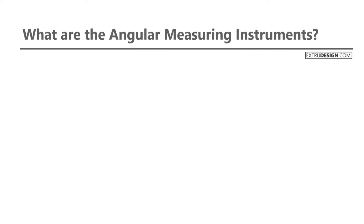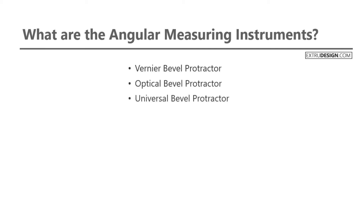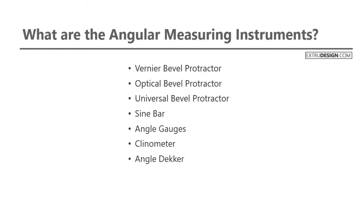There are different angular measuring instruments available: Vernier Bevel Protractor, Optical Bevel Protractor, Universal Bevel Protractor, Sine Bar, Angle Gauges, Kleinometer, Angle Decker, and Auto Collimator.